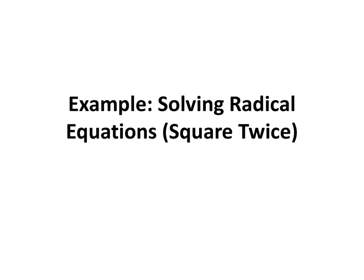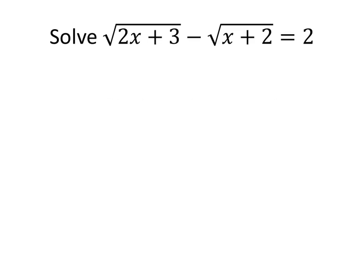In this video, we'll see a more complicated example of how to solve a radical equation. This time we'll have to square both sides twice. Here's the example: solve the square root of 2x plus 3 minus the square root of x plus 2 equals 2.